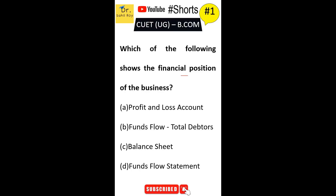Which of the following shows the financial position of the business? First option is profit and loss account. Second option is funds flow total debtors. Third option is balance sheet. Fourth option is funds flow statement. The correct answer is Option C, balance sheet. Balance sheet shows the financial position of the business.